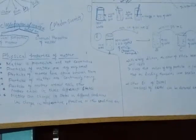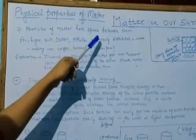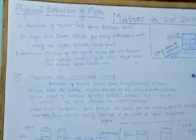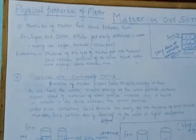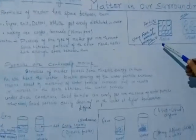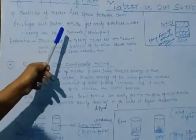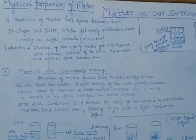The third physical property is that particles of matter have space between them. In solid, the space between particles is least; in liquid, the space is more than in solid; and in gases, the space is more than in liquid. Sugar, salt, Dettol, or KMnO₄ get evenly distributed in water because they fit into the spaces between water particles.